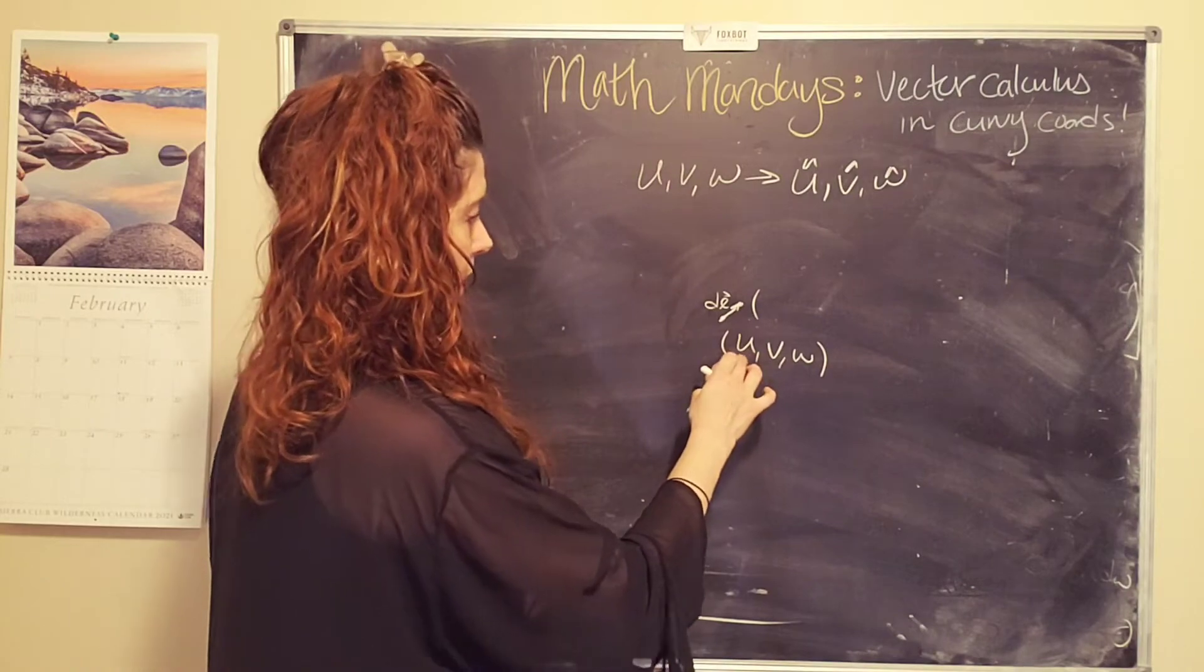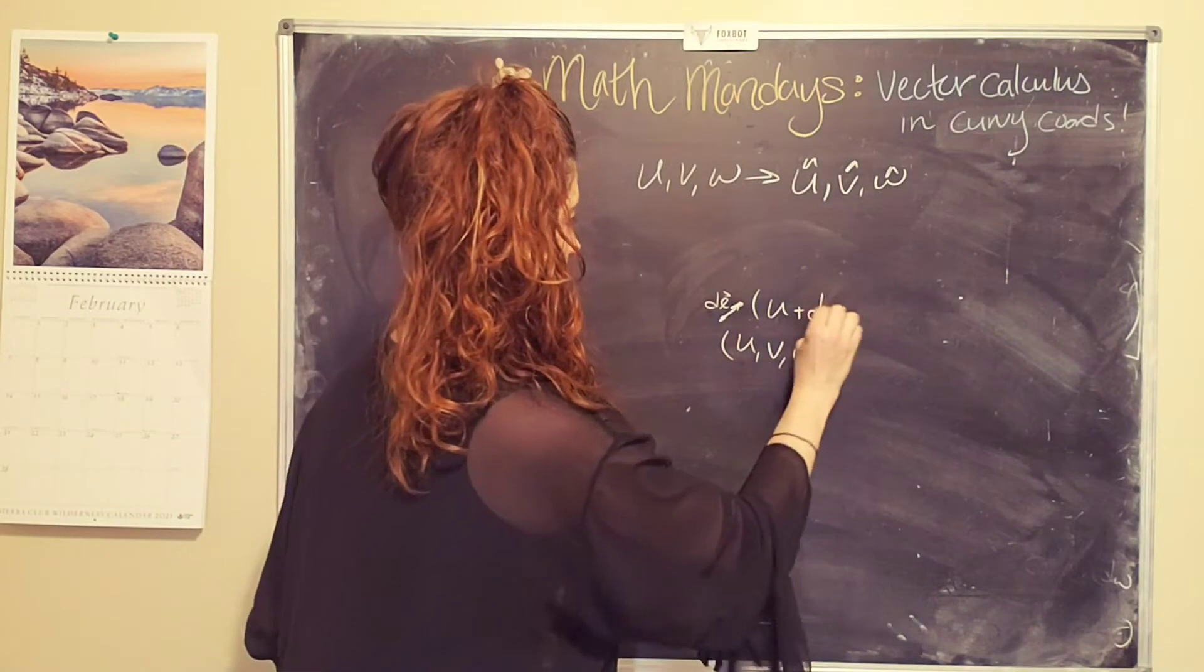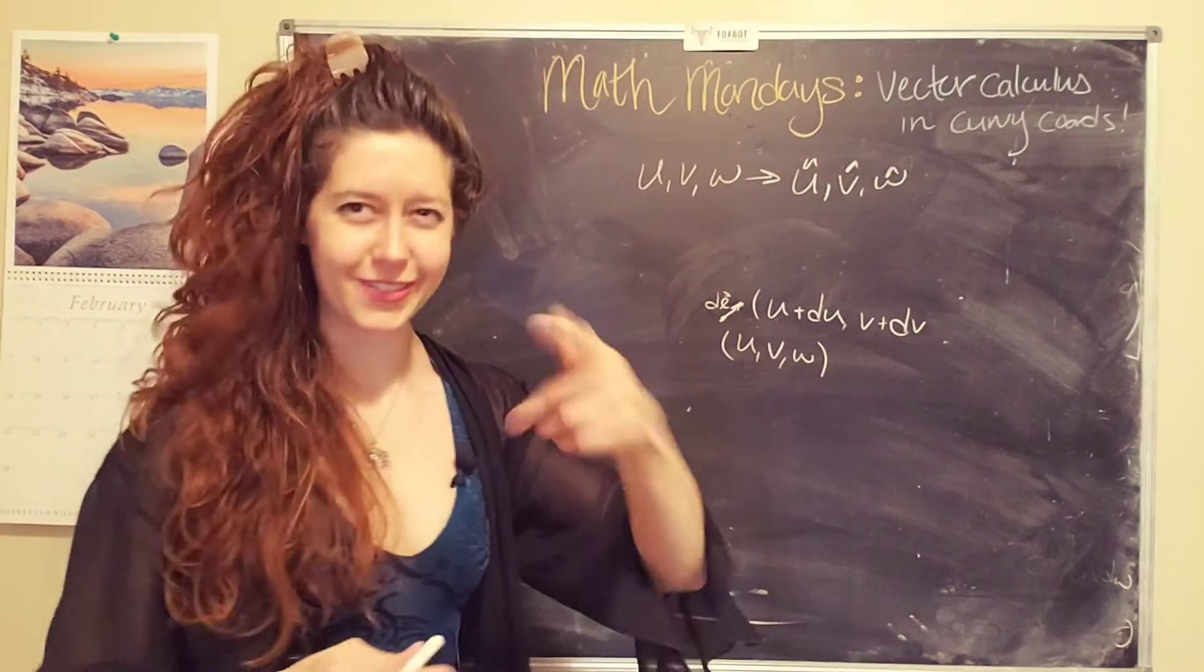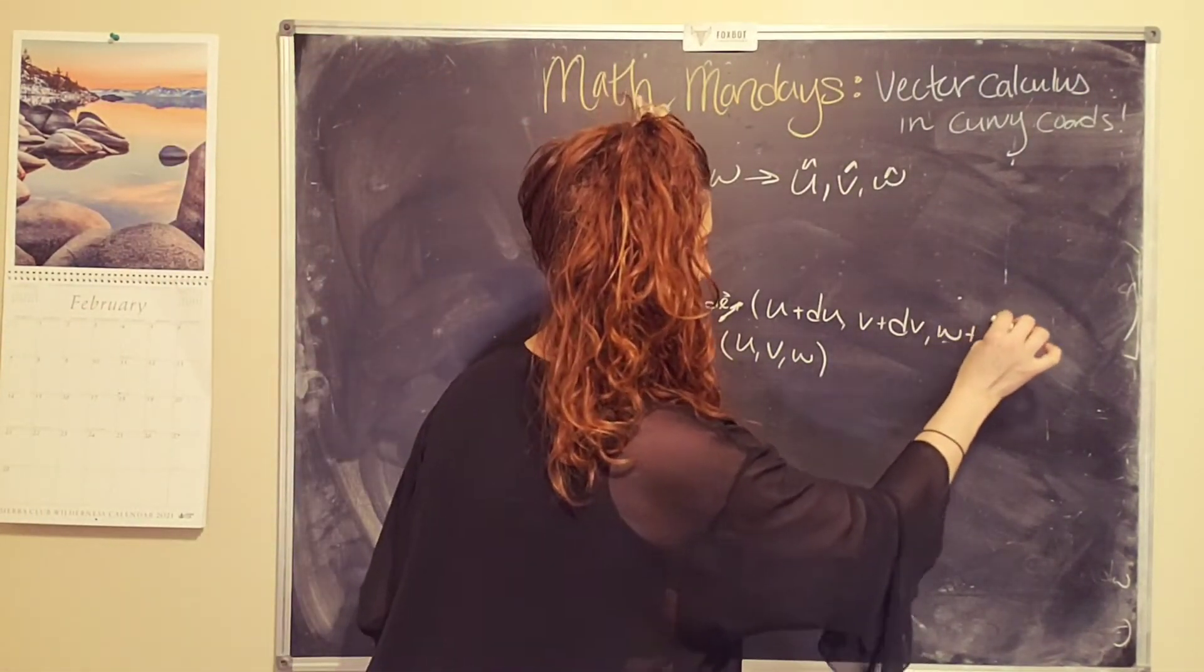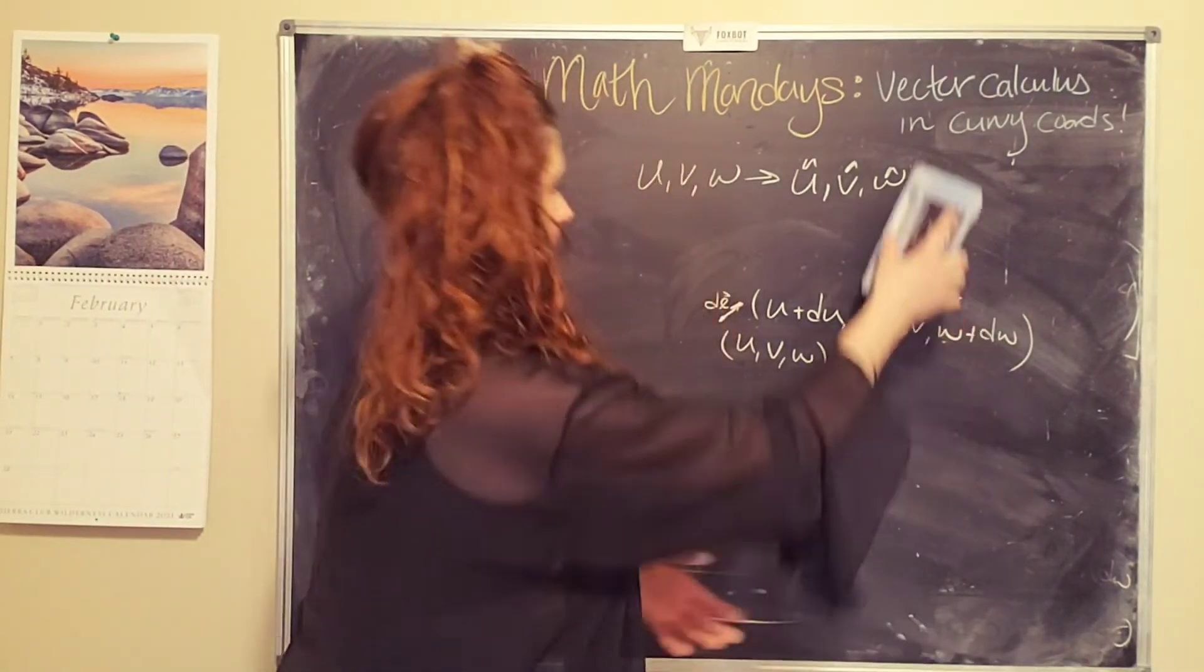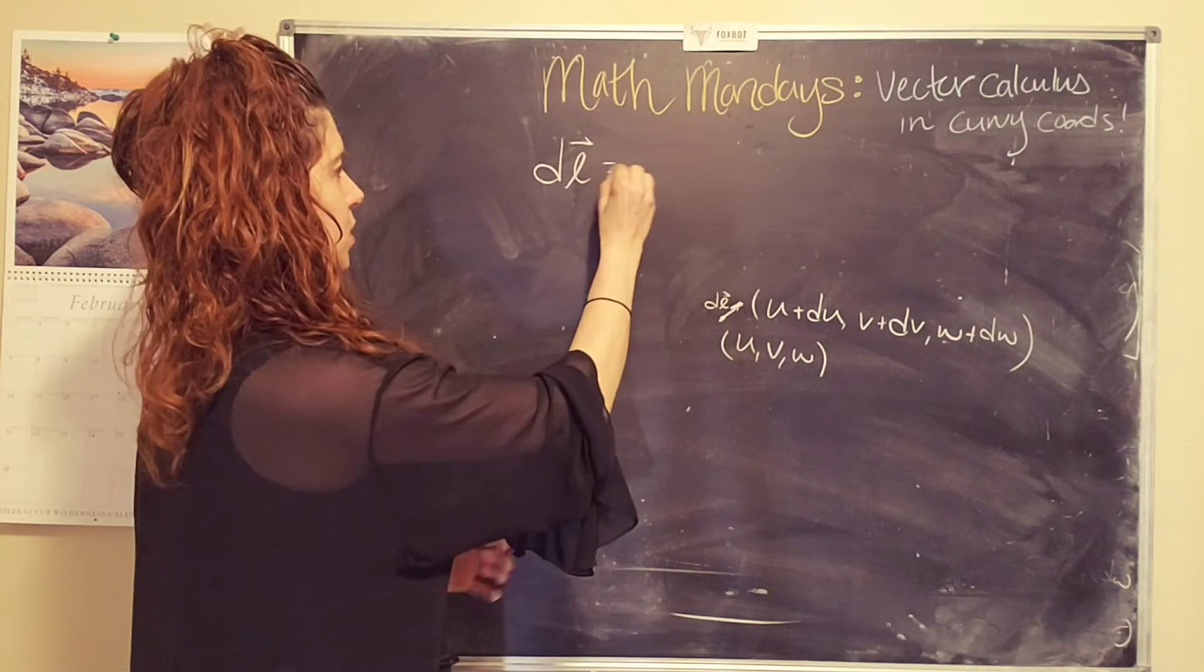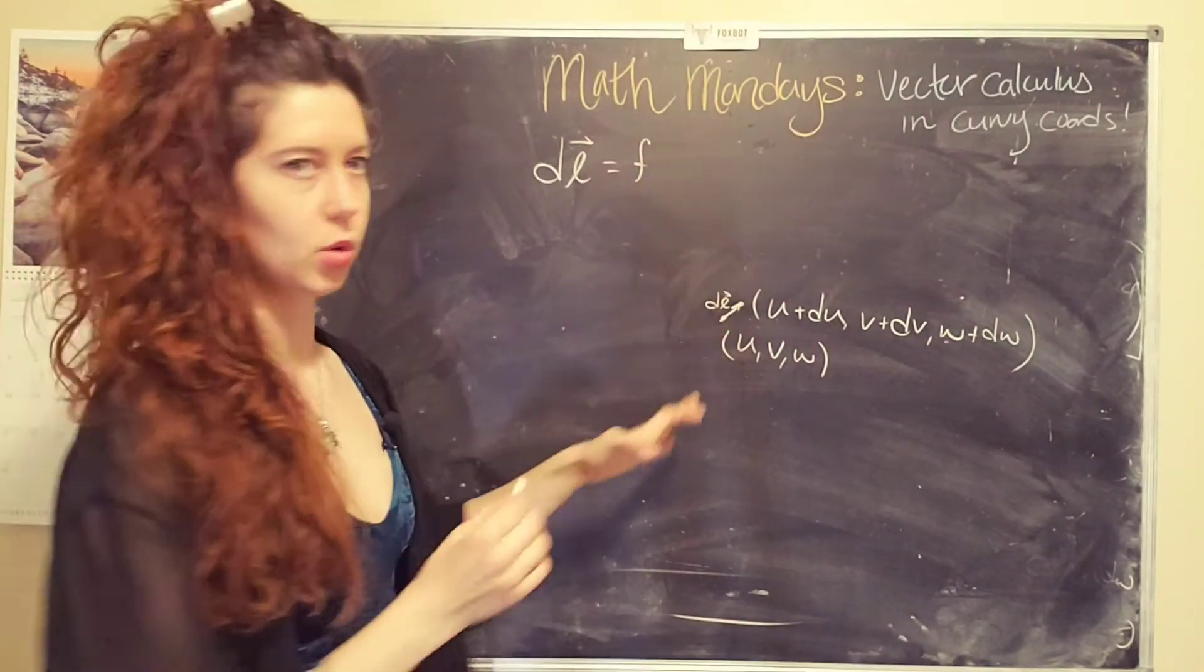Well, so my coordinate u has changed by a tiny amount, du. My coordinate v has changed by a tiny amount, dv. And so now my infinitesimal displacement vector can be written generically like this. This is kind of a placeholder, this function f, where we have du in the u direction.